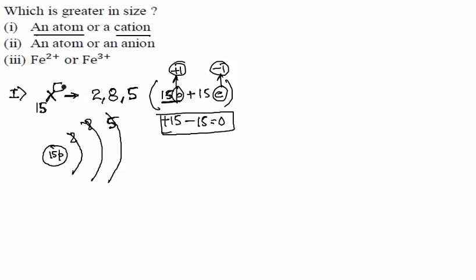There is no charge on X — it is electrically neutral. These 15 protons are holding all 15 electrons (configuration 2, 8, 5 — total 15 electrons).